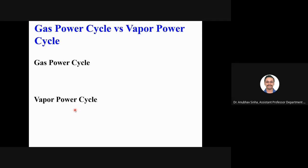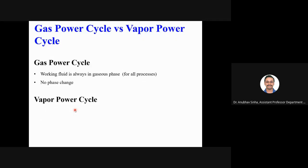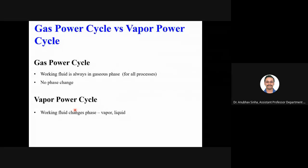This chapter covers gas power cycles; the next chapter deals with vapor power cycles. The key difference is that in gas power cycles, the working fluid is always in the gaseous phase for all processes — no phase change is observed. In vapor cycles, the working fluid undergoes phase change, existing sometimes as vapor and sometimes as liquid. That is the major difference between gas power and vapor power cycles.